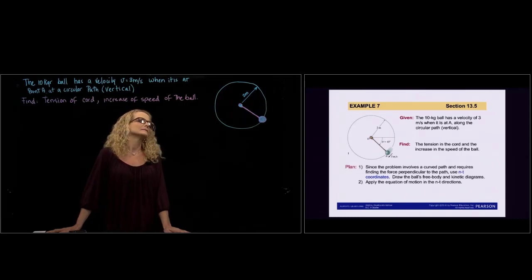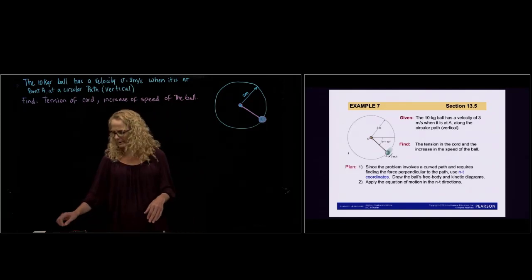So we have a system, we have a 10 kilogram ball that has a velocity of 3 meters per second when it is at point A.